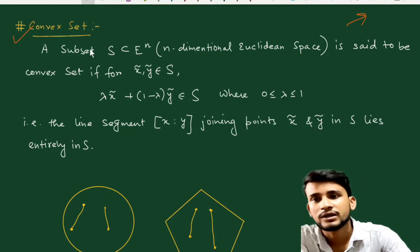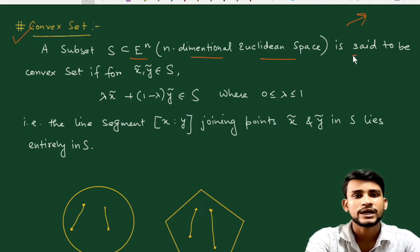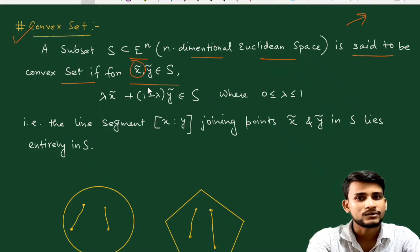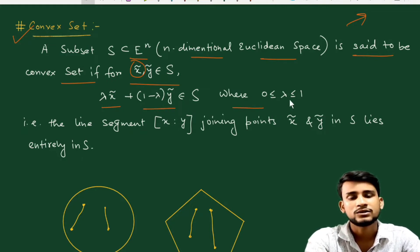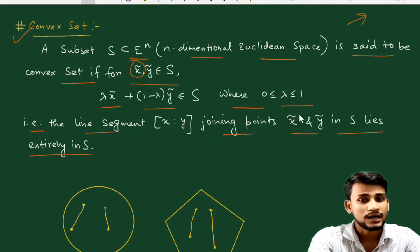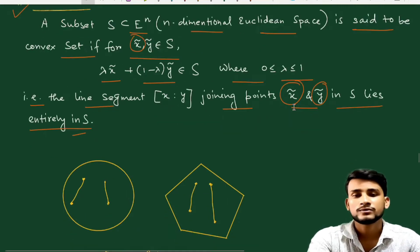A subset S from R^n — the n-dimensional Euclidean space — is said to be a convex set if, for any x, y belonging to S, the point lambda*x + (1 - lambda)*y belongs to S, where 0 ≤ lambda ≤ 1. That is, the line segment joining the two points x and y in S lies entirely in S.